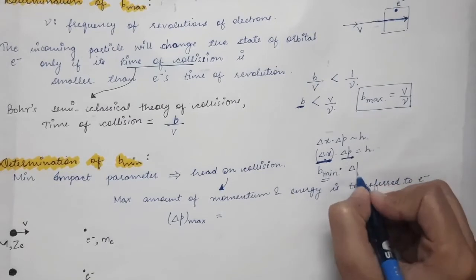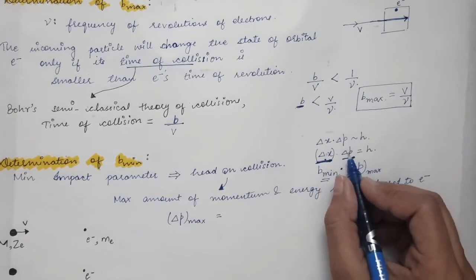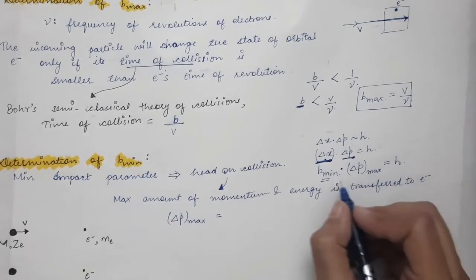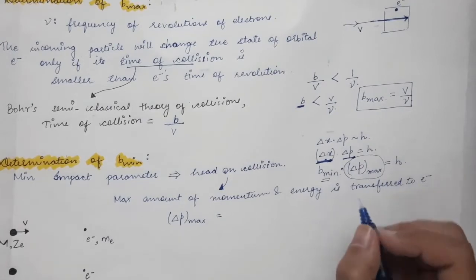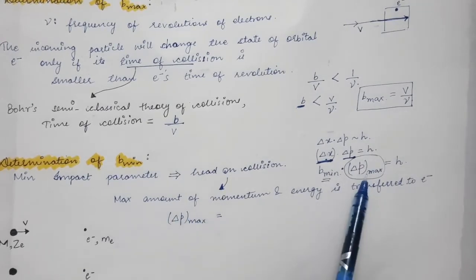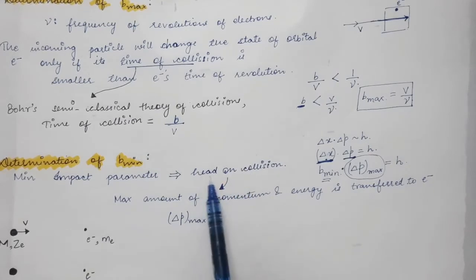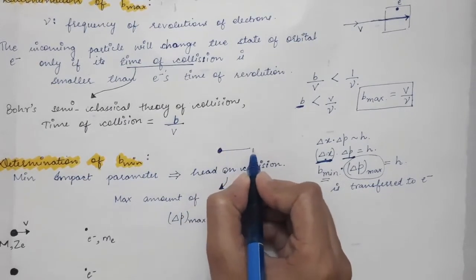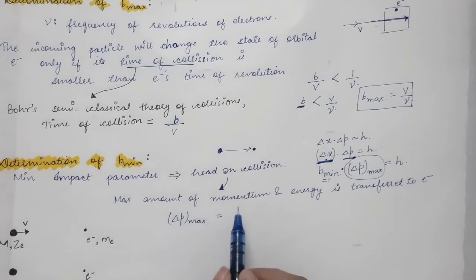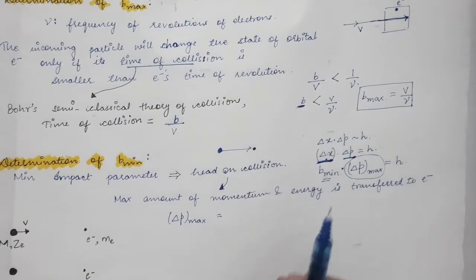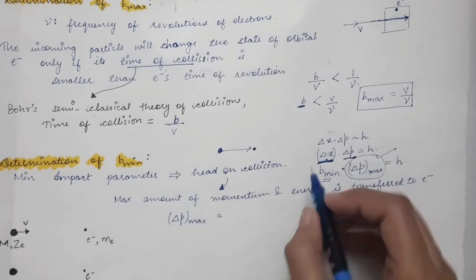The maximum change in momentum occurs in a head-on collision, where the heavy charged particle directly interacts with the electron. We consider a heavy charged particle of mass M, charge Ze, moving with velocity V towards a stationary electron of mass Me. To find Δp_max, we switch to the frame of reference in which the heavy charged particle is at rest.